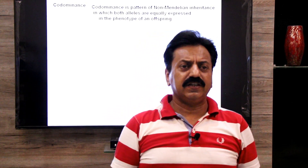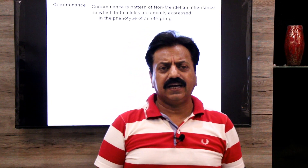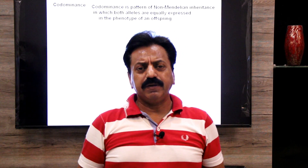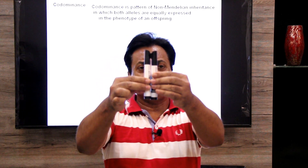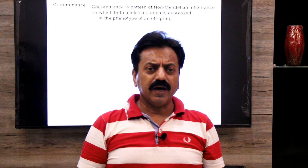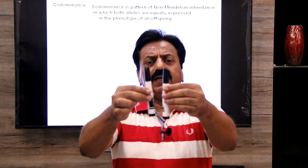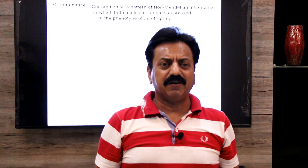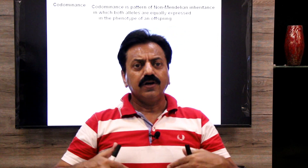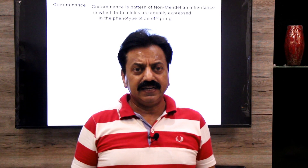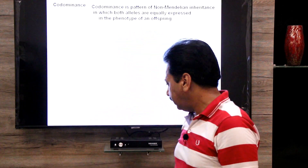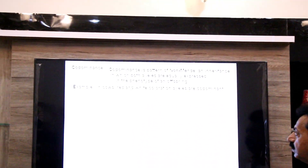यह non-Mendelian pattern of inheritance को follow करता है क्योंकि Mendelian trait ऐसे trait को कहा जाता है जिसमें किसी भी particular trait को एक pair of alleles control करता है तो उसमें से एक dominant होता है। मगर codominance में both alleles are equally dominant — दोनों equally dominant होते हैं और दोनों खुद को offspring में equally express करते हैं, इसीलिए यह non-Mendelian trait है।